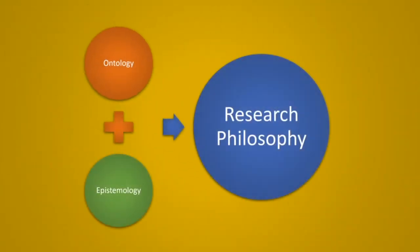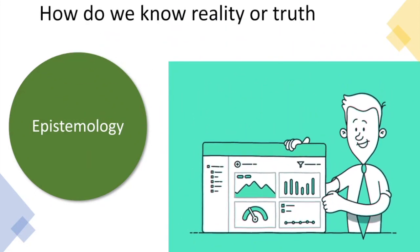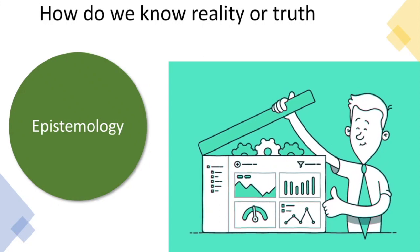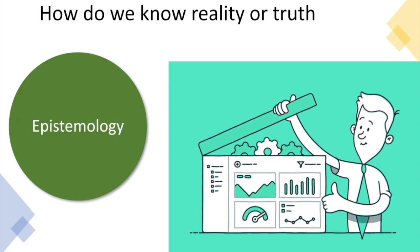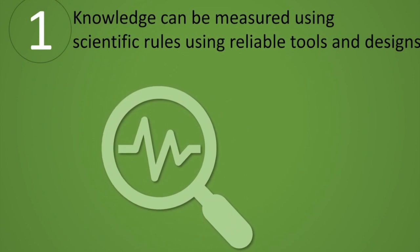Now let's move to epistemology, which we should understand very clearly. Epistemology tells you about how we receive knowledge — how do we know about truth and reality? It tells us how we collect knowledge. There are many epistemological beliefs, but here I am taking only three major ones. The first belief is that knowledge can be measured using reliable tools and techniques — there is measurability in the truth or knowledge.